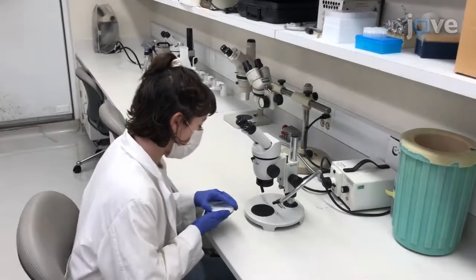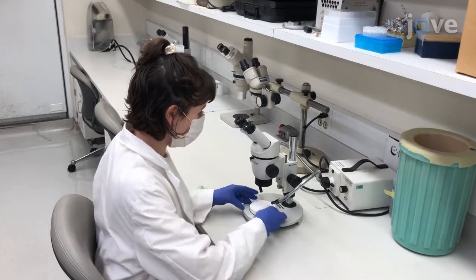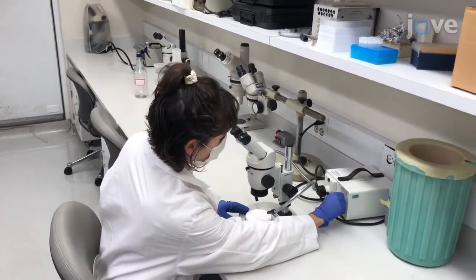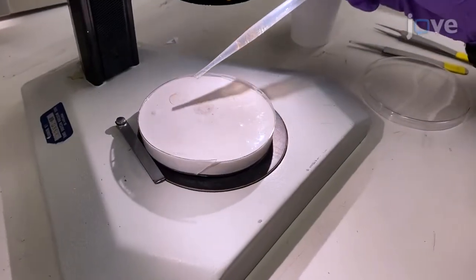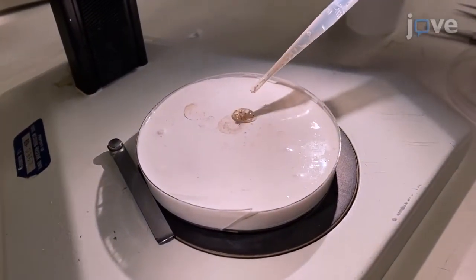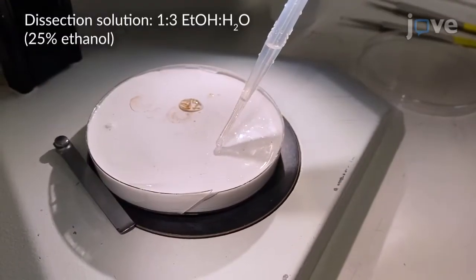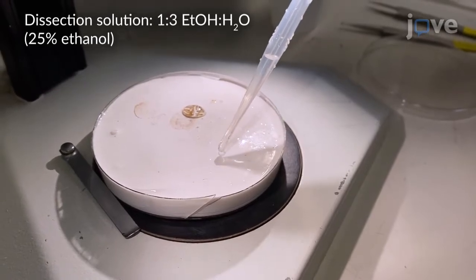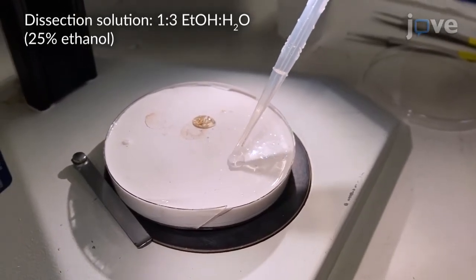To start the experiment, place a putty plate on the stage of a dissecting microscope and transfer 10 mosquito L4 larvae onto the putty plate. Then place a drop of the dissection solution onto the putty plate separate from the larvae.